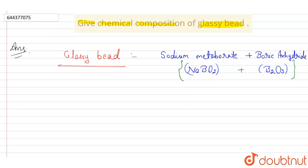The formation of glassy bead: glassy bead is produced when we heat borax. Borax is Na2B4O7·10H2O.